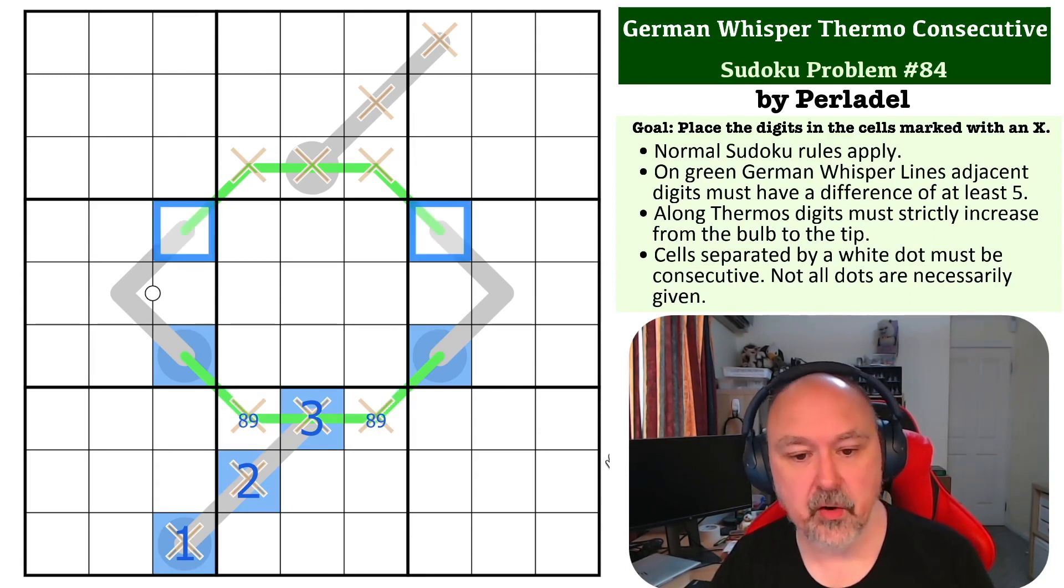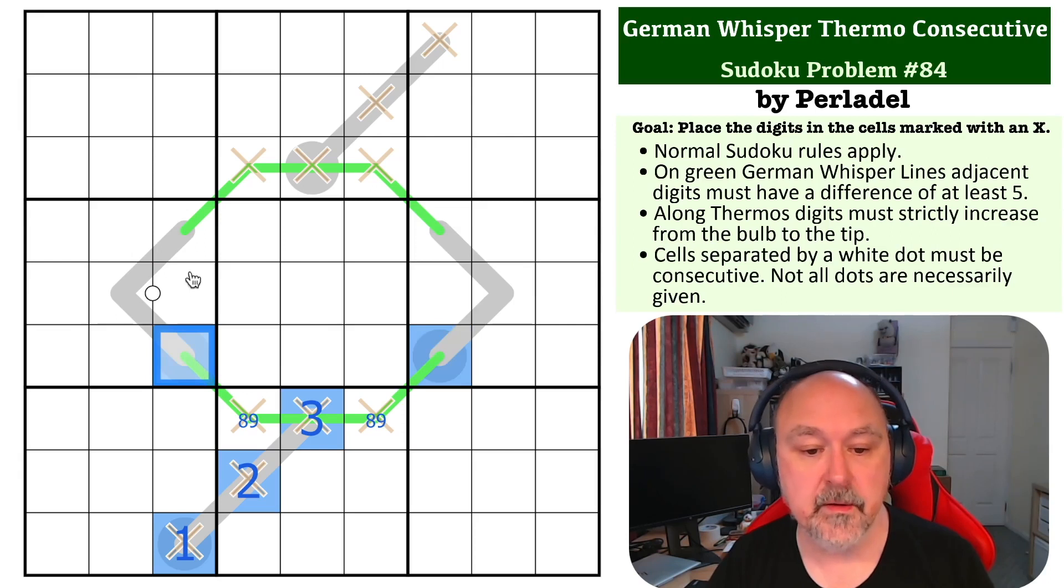Now the question we want to ask ourselves is: can these be low? It's a lot easier to prove now that we have these being forced to be low. Because if this is low, there is a one here now. So if this is low, this has a minimum of two, so this would have to be a four. It'd go 2-3-4. Now if this is 4-3-2, what's this digit? Because the only thing that is consecutive with three is two and four, and I've already placed them. So these can't be low; that just doesn't work.